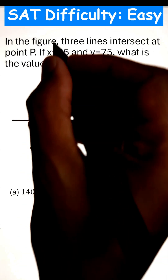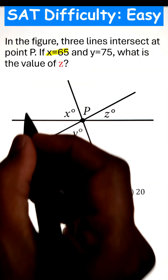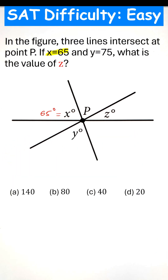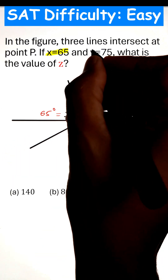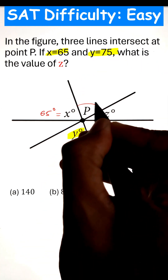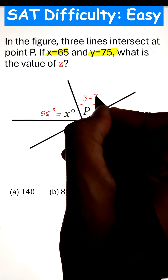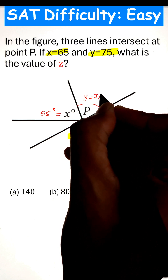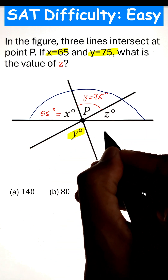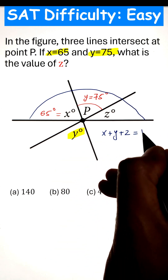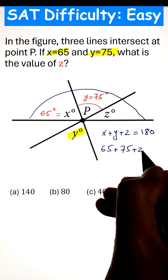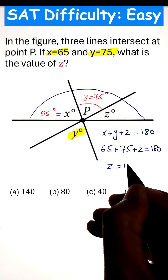If three lines intersect at point P and X equals 65 while Y equals 75, to calculate angle Z, we can start by noting that the angle between X and Z will be equal to Y, as it is opposite to the intersecting lines. Next, since X, Y, and Z make a straight line, their sum will be 180. Simplifying will give us the value of Z.